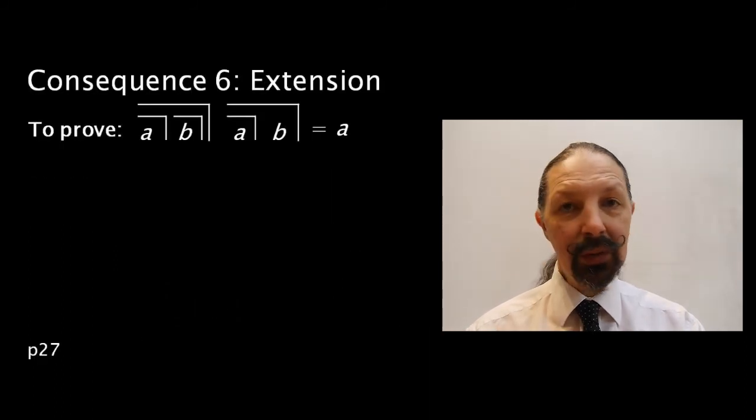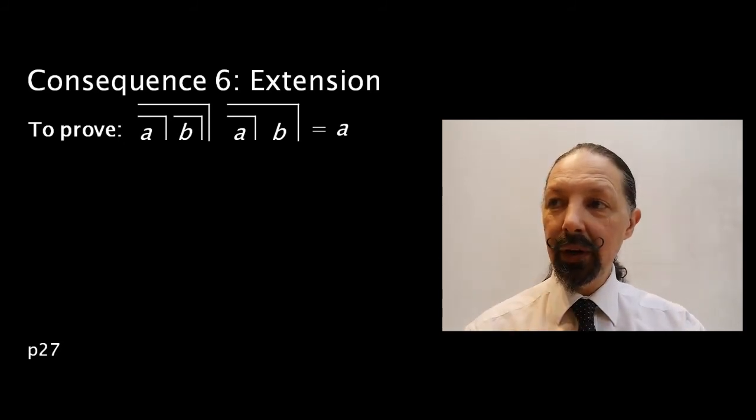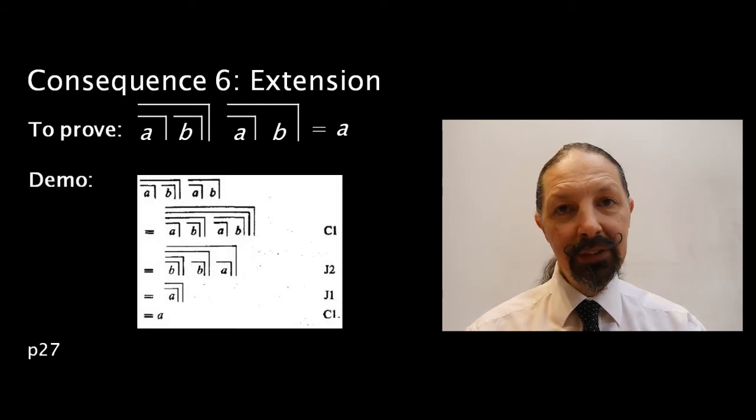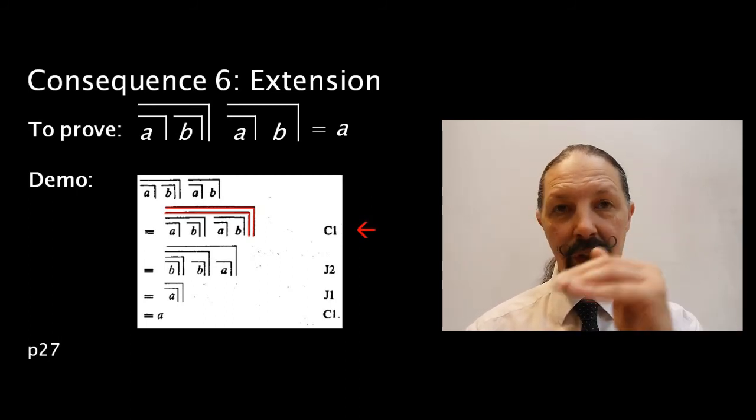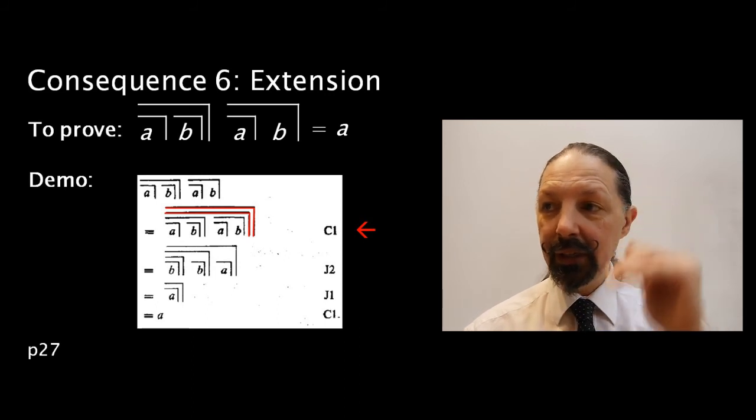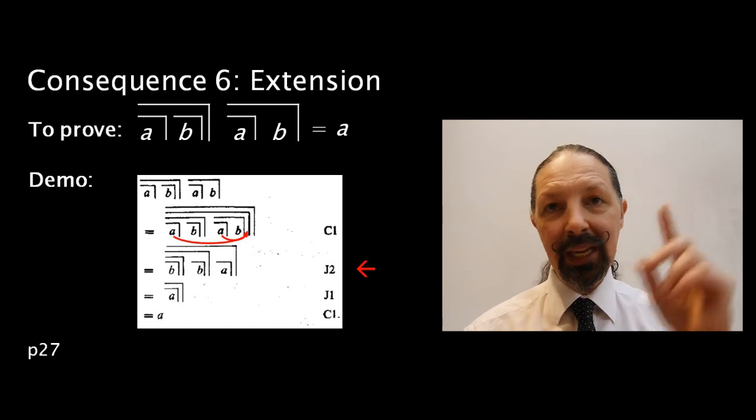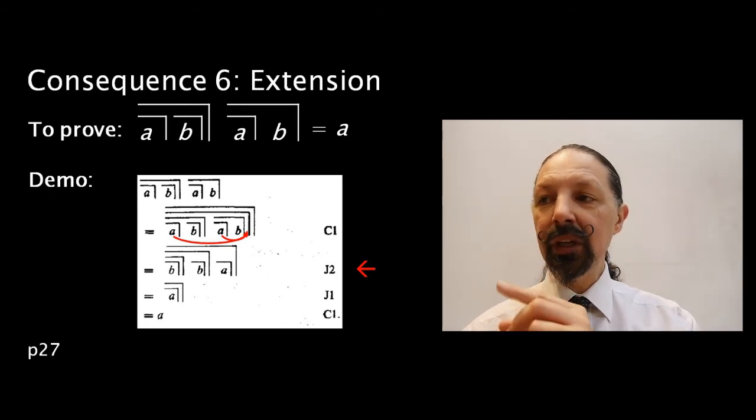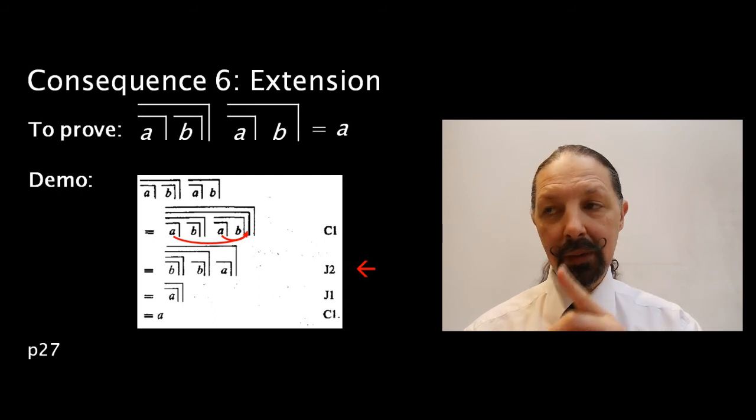Consequence six is called extension. And as you can see, we're getting longer and longer expressions. The proof of this is as follows. We take C1 and put mark over mark over the whole of the expression, and that gives us two divisions under a mark. We use J2, taking the common term out. So, instead of PRQR, we're going to do RP mark over 2, RQ mark over 2.